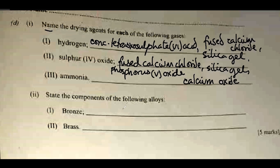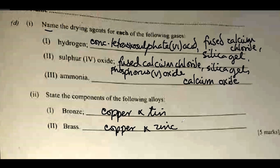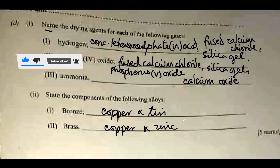State the components of the following alloys. Bronze is copper and tin. Brass is copper and zinc. That brings us to the end of our correction. If you enjoyed this video, give us a like, subscribe and turn on your notification bell. Best of luck in your remaining exams.